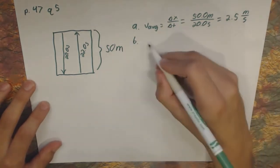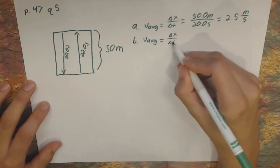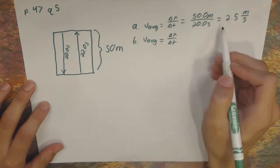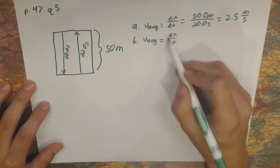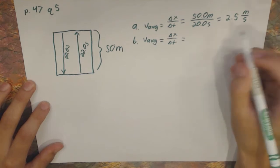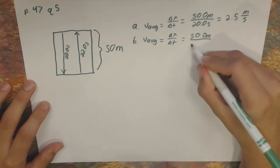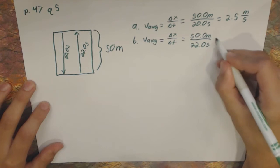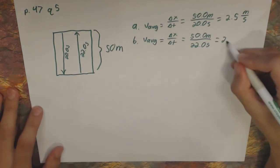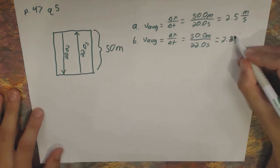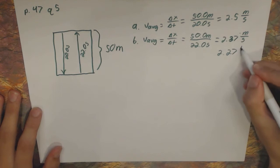Part B asks: what is the average velocity for the second half of the swim? Again, delta X over delta T. It's always good to write out the formula first — on free response questions the general formula will at least get you partial credit. For the second half it's the same distance on the way back: 50.0 meters in 22.0 seconds, which gives 2.27 meters per second.